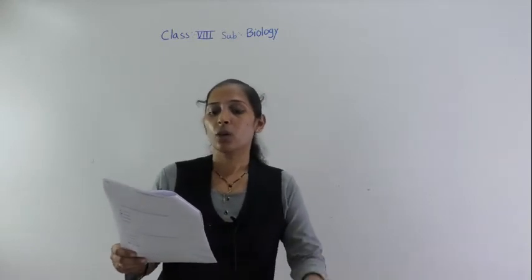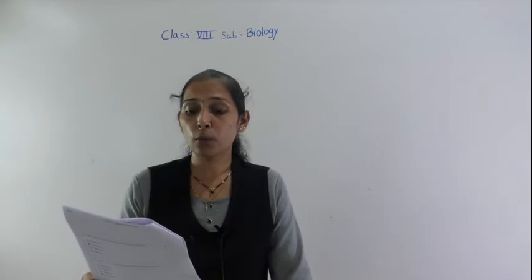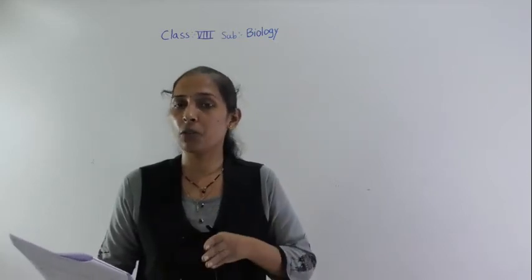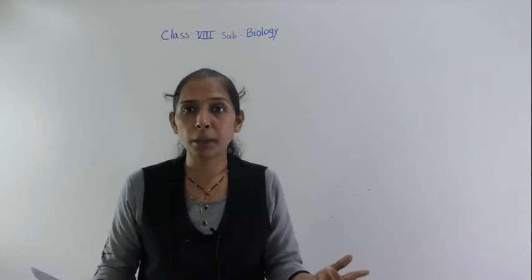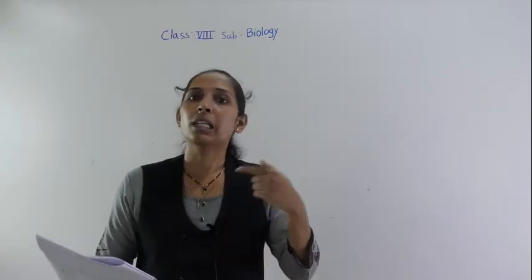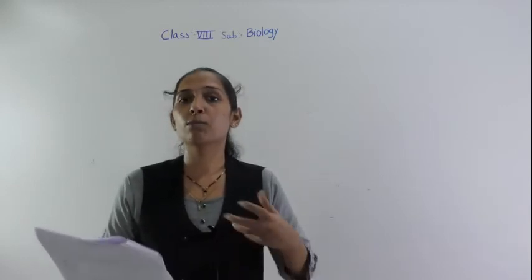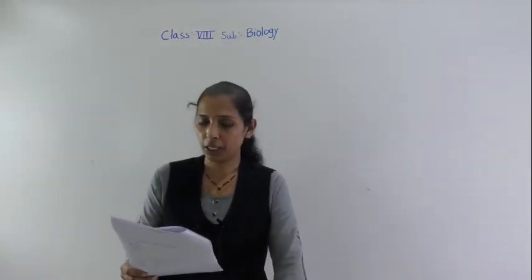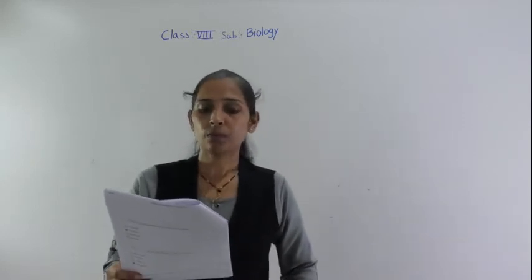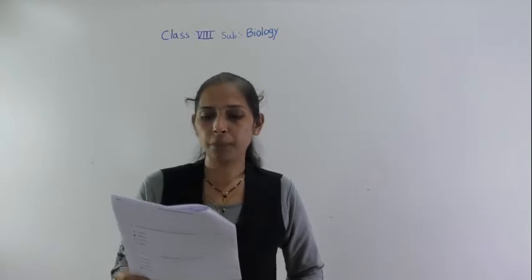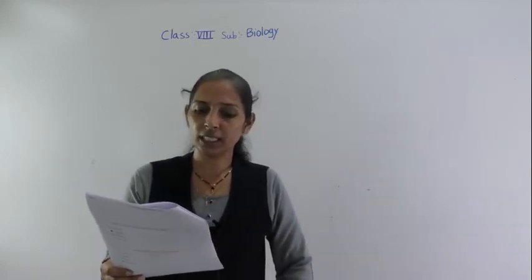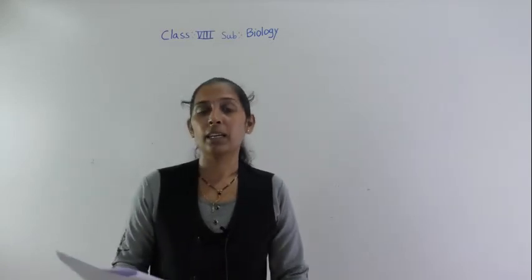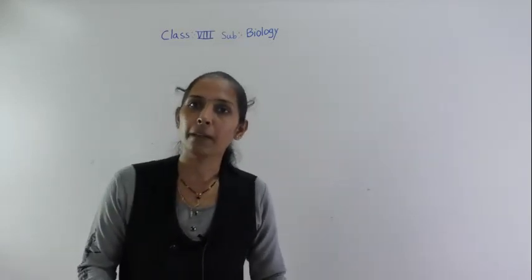The option 'grow more crops' is not correct because growing crops doesn't guarantee proper yield. We need to grow crops that give increasing crop yield, which is why option number 3, high yield variety program, is correct. Question number 62: yellow revolution is concerned with oilseeds production. Question number 63: white revolution is concerned with milk and milk products.